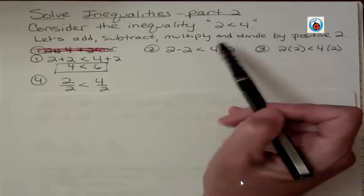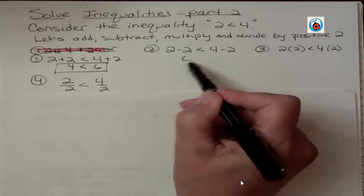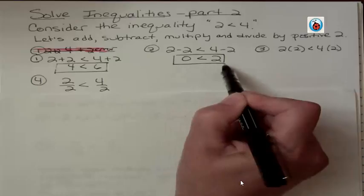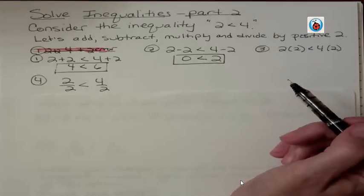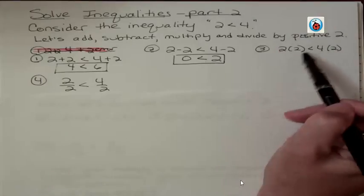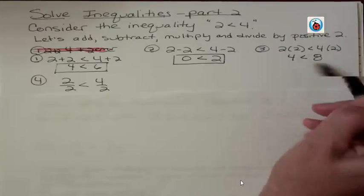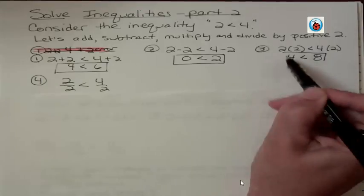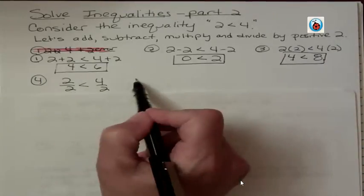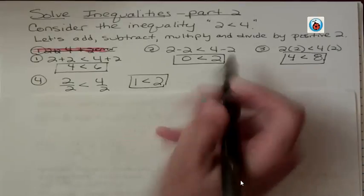What about 2 minus 2 and 4 minus 2? Well, then I get 0 is less than 2, and I hope you'll agree with me that that is also true. So I can subtract a positive number from both sides, subtract any number from both sides, actually. What about if I multiply 2 times 2, then 2 times 4? 4 is less than 8. This is also true, and what about if I divide 2 divided by 2 is 1, and 4 divided by 2 is 2.